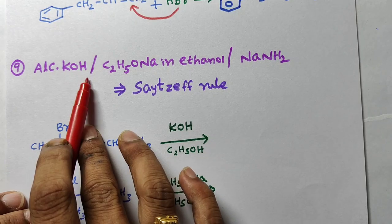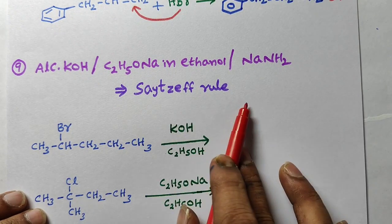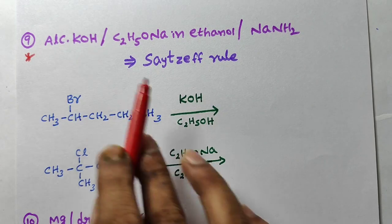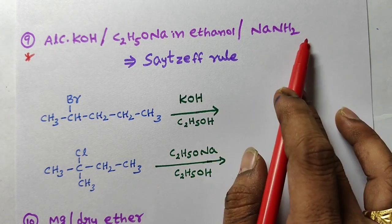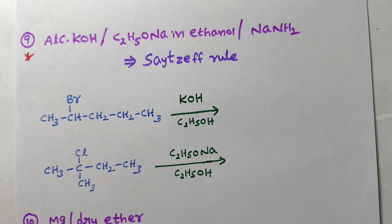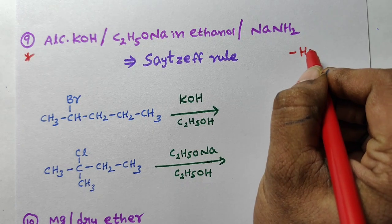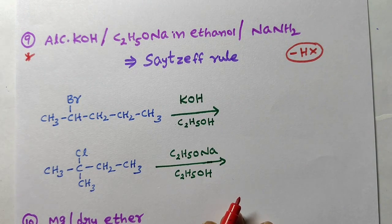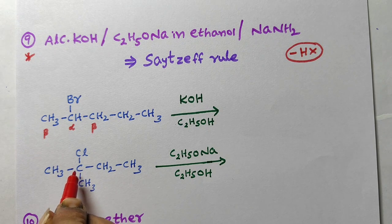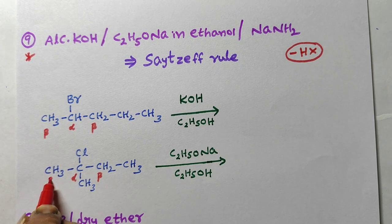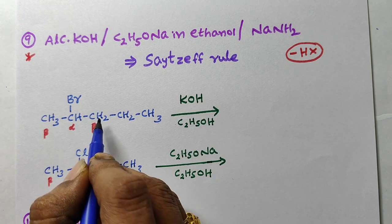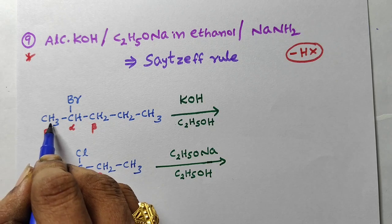Next reagent: alcoholic KOH, or sodium ethoxide in ethanol, or sodamide — these follow Saytzeff's rule. All three are dehydrohalogenating agents; HX (either HCl or HBr) will be eliminated. The carbon bearing the halogen is the alpha carbon; adjacent carbons are beta carbons. According to Saytzeff's rule, hydrogen is removed from the less hydrogen-containing beta carbon to give the more substituted alkene as the major product.